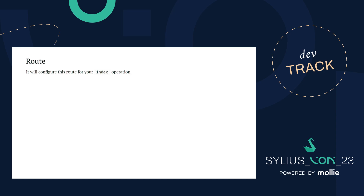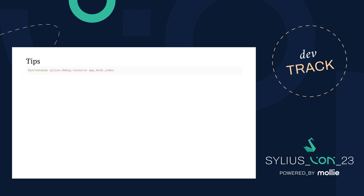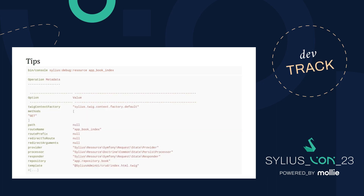It will configure this route by default with the name app_book_index, GET method, and /books as path. You can customize all this configuration with arguments into your index attribute. There's also a Silius debug resource command which has been improved to dump the new metadata — the operation metadata. I need your attention on the new provider here: we have a default provider to handle the state and the request from Symfony.